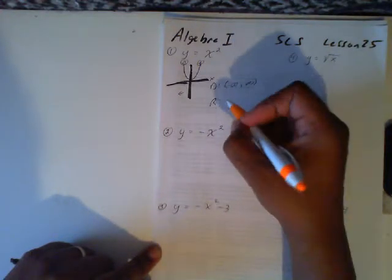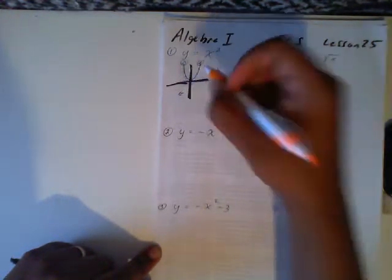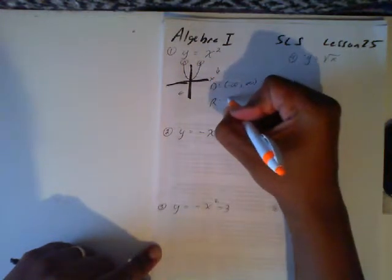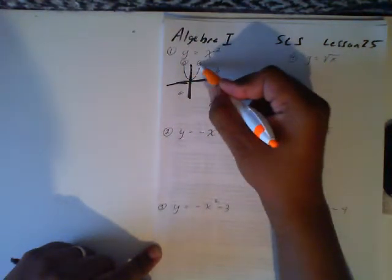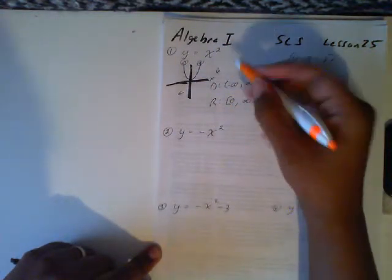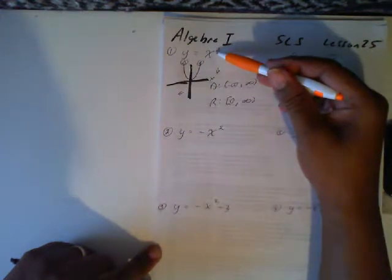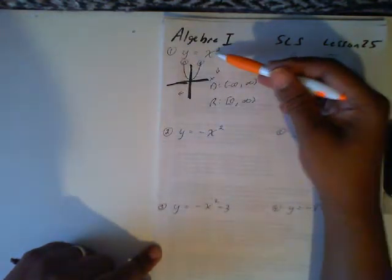For the range, the lowest that this graph will go is the vertex down here at 0, and it includes 0. The highest that this graph will go — it will keep going higher and higher, up to positive infinity. So the range will go no lower than 0, and you will get any answer that is positive.